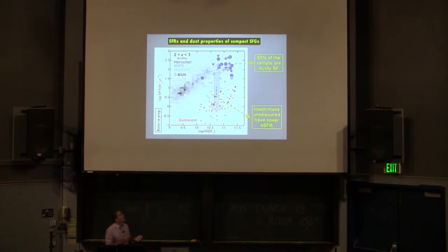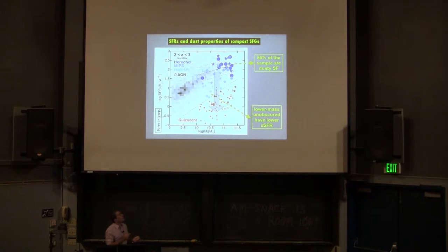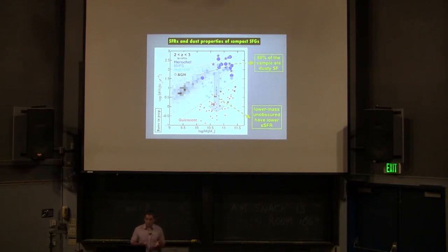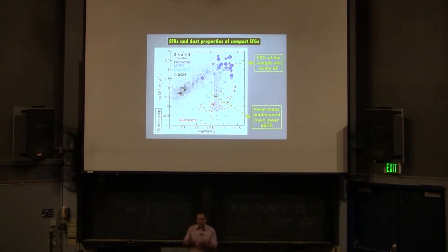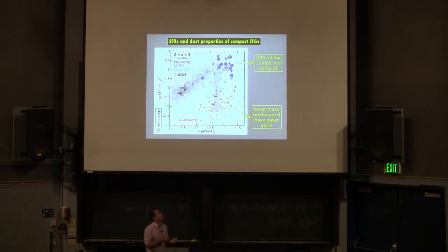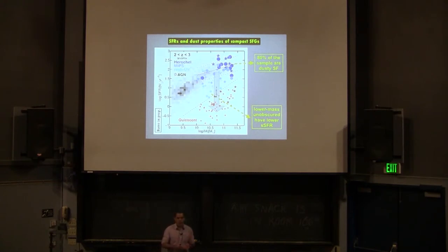The incidence of AGN is quite high — roughly 40 to 50 percent of the sample. These galaxies are also detected at far-infrared wavelengths in both MIPS and at longer wavelengths with Herschel. They are very obscured. If they are truly the progenitor population of quiescent galaxies, it means that the formation of the first quiescent galaxies involved a very dusty phase, and that whatever caused the quenching also caused the galaxies to lose a lot of this dust.